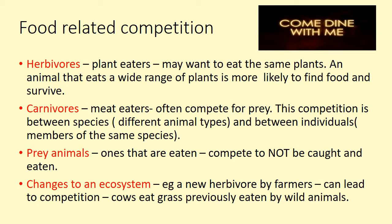So the first type of competition — which you should have got from the video — is to do with food. You've got four key bits of information here. The red words are the scientific vocabulary, the keywords you need to use. You need to know what they mean and be able to spell them. Make sure that 'herbi-' and 'carni-' have an 'i' not an 'e' — really important.